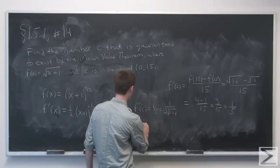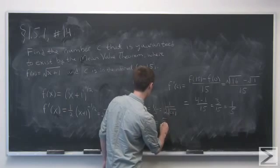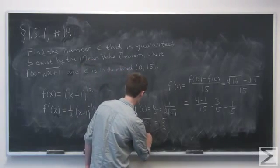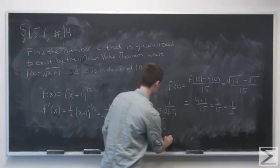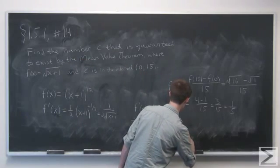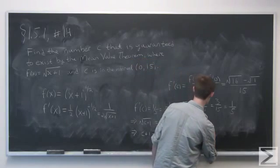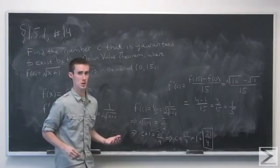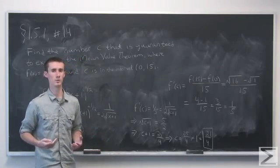Multiplying both sides by the square root of c plus 1 gives us that the square root of c plus 1 equals 5 over 2. Squaring both sides, we have c plus 1 equals 25 over 4, which gives us c equals 25 over 4 minus 1, or 25 over 4 minus 4 fourths, which is 21 over 4. So the instantaneous rate of change at the point c, which is 21 over 4, equals the average rate of change over the entire interval from 0 to 15.